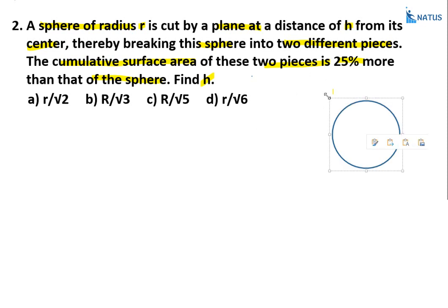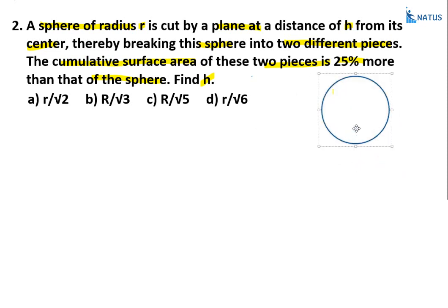Consider the sphere with center C. A plane cuts the sphere, and the distance from the center of the sphere to the cutting plane is h. The sphere has radius r, and the radius of the new circle formed by the cut is r1.